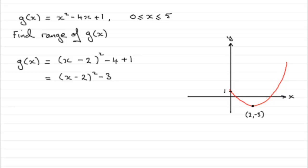So our range goes from this lowest point here, which is at minus 3, and then it goes up to a point up here where x is 5. Now the question is, what value do you get for g(5)? Well, let's find out.